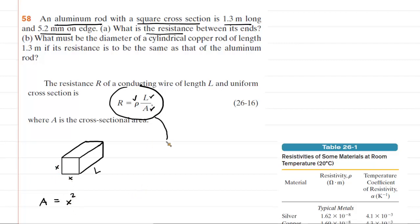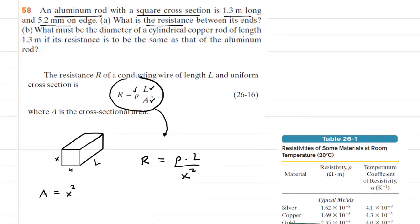So we can actually rewrite this resistance equation as follows. We can say the resistance of this aluminum wire is equal to the resistivity times the length and then divided by x squared. And then at this point, we simply have to plug in the known values. They gave us the length and the value of x.